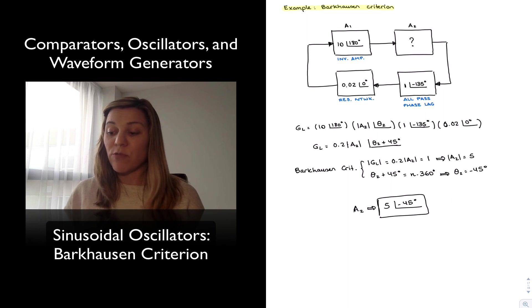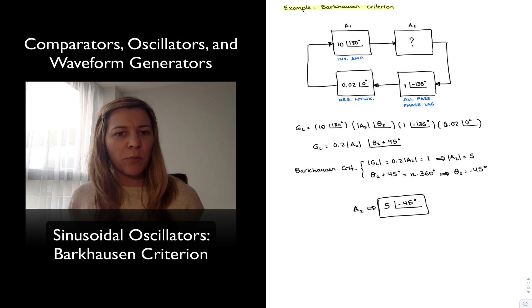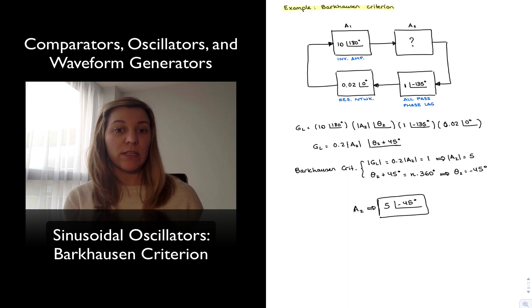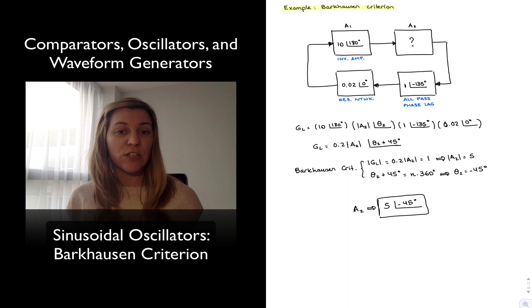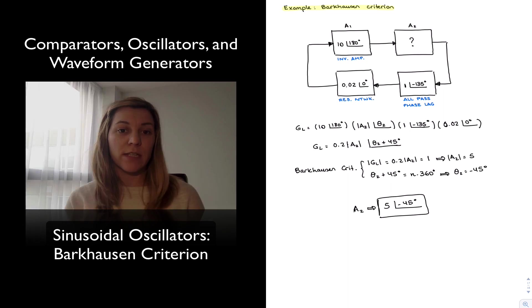If we had represented all these different systems with their circuits, it might have looked very complicated to ensure the gain equals 1. But by compartmentalizing and looking at each stage based on its transfer function, it becomes easier to figure out the conditions for oscillation. This is the kind of methodology we're going to follow when we look at oscillator circuits.